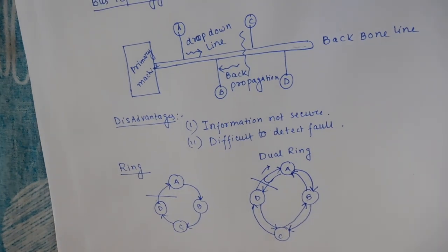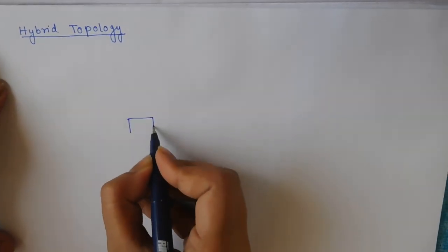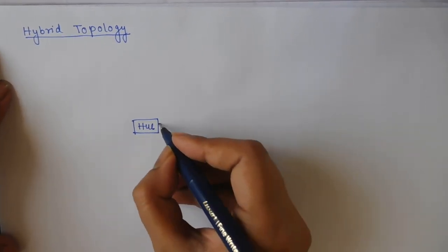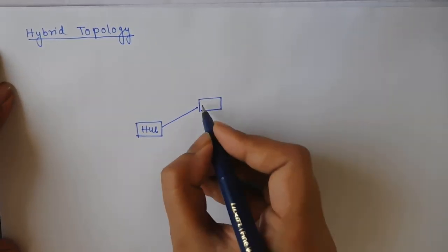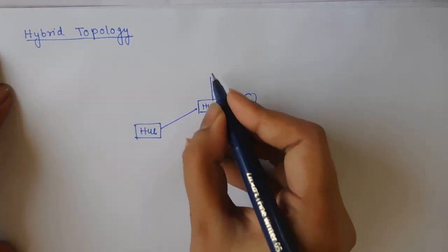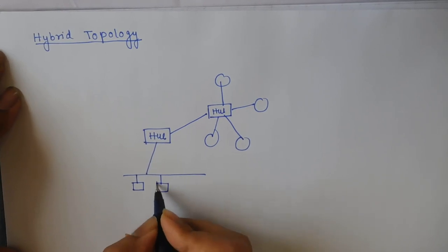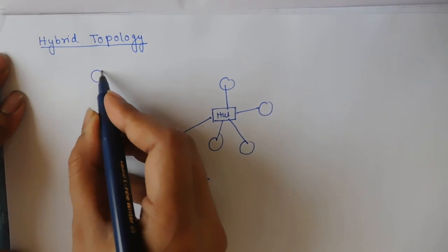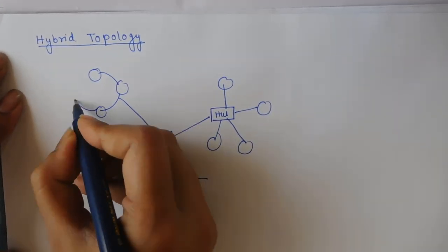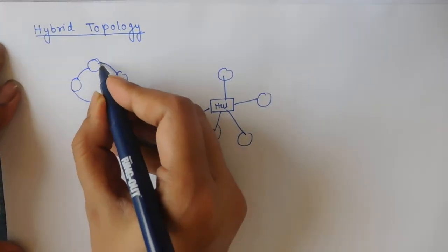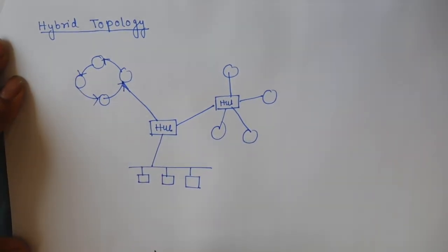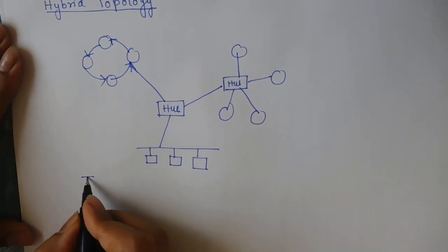Now we move on to hybrid topology. This is not a basic topology but a mixture of all the topologies we have seen. A central hub can connect to any of the topologies — suppose it is a star topology, it can also be connected to a bus, and also connected to a ring in one direction.